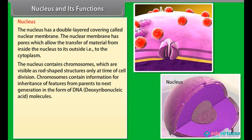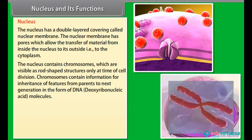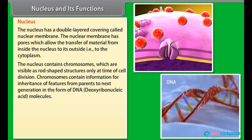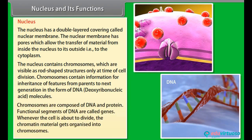The nucleus contains chromosomes, which are visible as rod-shaped structures only at the time of cell division. Chromosomes contain information for inheritance of features from parents to the next generation in the form of DNA (deoxyribonucleic acid) molecules. Chromosomes are composed of DNA and protein, and functional segments of DNA are called genes.